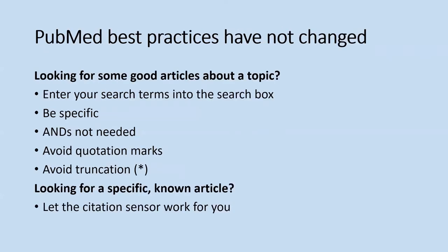The best practices for doing a PubMed search have not changed. If you're looking to find a good article on a topic, enter your search terms into the search box, be as specific as possible, you do not need to use the word 'and,' and avoid quotation marks and truncation, which is the asterisk. If you're looking for a specific known article, it's best to let the citation sensor work for you.